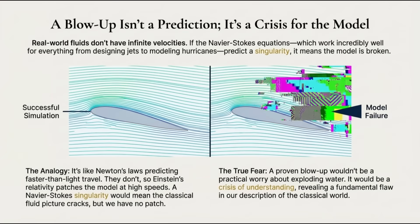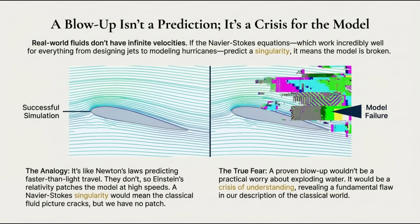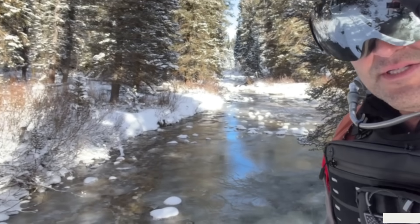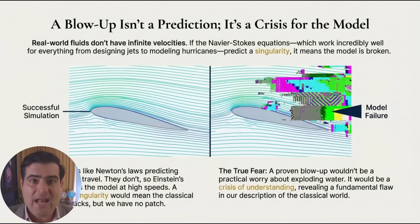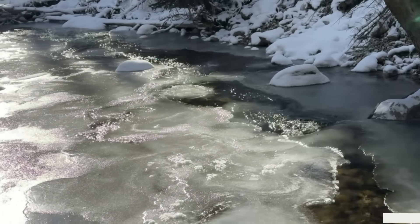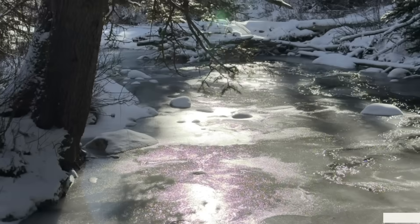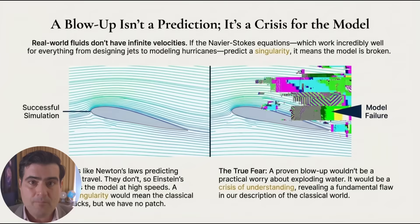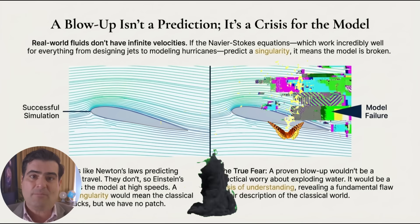Because of that troublemaker term, these equations govern two completely different worlds. On one side, we have laminar flow — the predictable world. This is smooth, gentle, and soluble. We can calculate exactly what a slow-moving river will do. But turn up the speed, and you enter the second world: turbulence. This is the realm of chaos. In turbulence, tiny changes at the beginning magnify — they don't fade away, they get amplified. A butterfly flapping its wings causing a tornado is not just a metaphor; it's a mathematical possibility here.